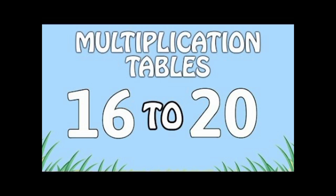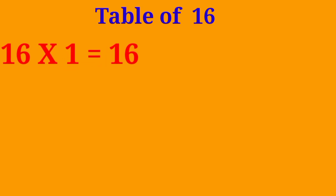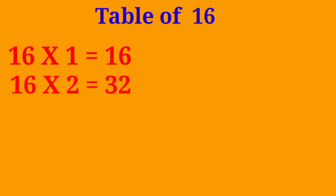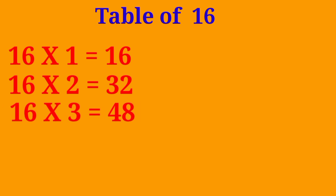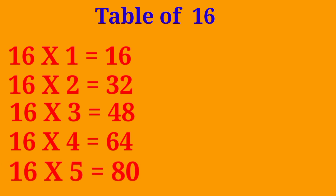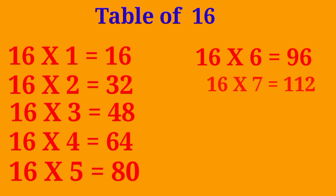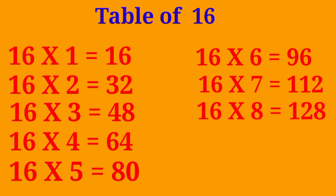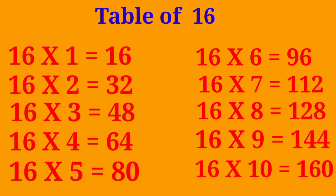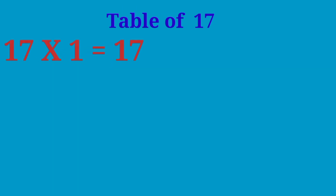Multiplication Table 16 to 20. Table of 16: 16×1 are 16, 16×2 are 32, 16×3 are 48, 16×4 are 64, 16×5 are 80, 16×6 are 96, 16×7 are 112, 16×8 are 128, 16×9 are 144, 16×10 are 160.